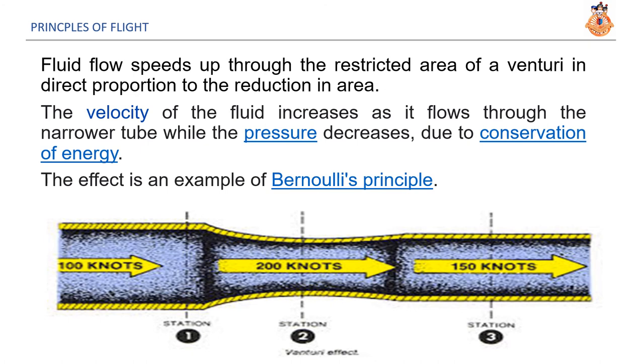Fluid flow speeds up through the restricted area of a venturi in direct proportion to the reduction in area. The velocity of the fluid increases as it flows through the narrower tube while the pressure decreases due to conservation of energy. The effect is an example of Bernoulli's principle. As you can see in this tube, when the fluid starts, it starts at 100 knots. But as it goes to the narrower end, its speed or velocity increases to 200 knots. But then, as the area of the tube increases, its velocity decreases. This is the venturi effect.